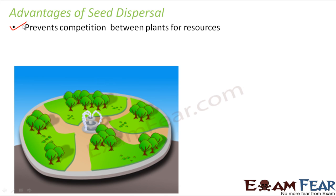For example, take rice plants — they all have the same type of requirements. If too many rice plants are crowded within a particular area, they start competing with each other for resources like light, water, and minerals. As a result, many plants are not able to get sufficient nutrients. But when seeds get dispersed, some seeds are here and some are there — in different areas. So the plants in each locality have sufficient nutrients for themselves, and there is no competition, which results in healthy growth of plants.